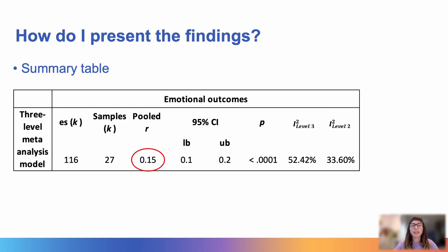Okay, so we ran our three-level meta-analysis in R. We have obtained our pooled effect size, our variance components, we have quantified our heterogeneity in level 3 and level 2. How do we present the findings? It is common and also very useful to have a summary table. So, in this table, we can see that we have the number of effect sizes, the number of samples, the pooled R, so the effect size, the 95% confidence interval, the P value, and the I-squared statistic for level 3 and level 2.